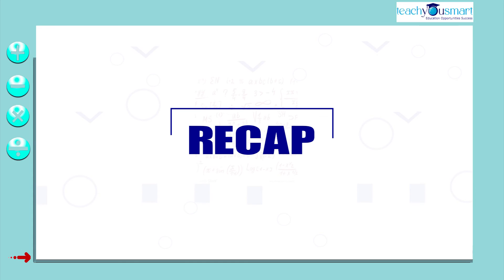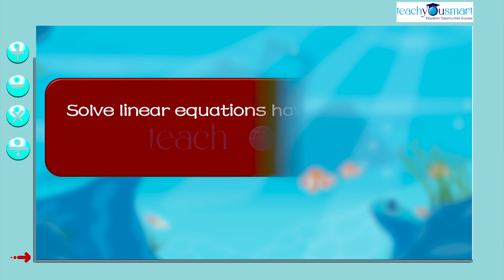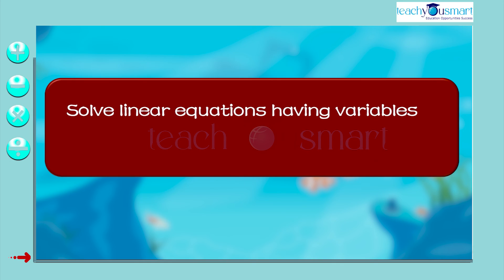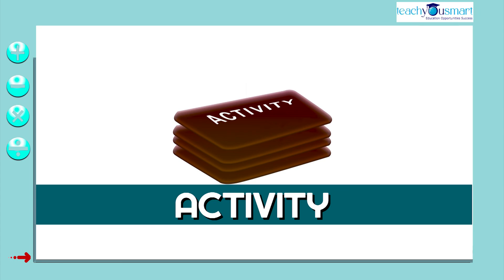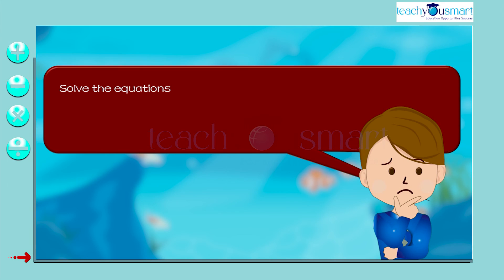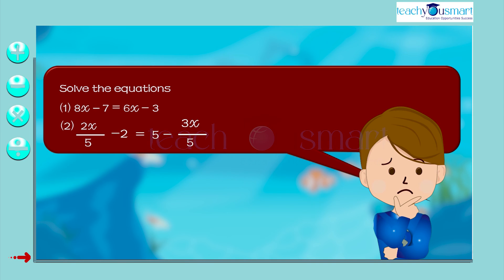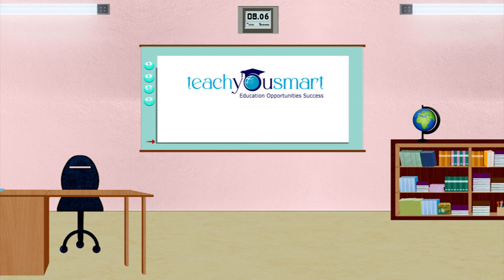Let's have a quick recap. Today we learned to solve linear equations having variables on both sides. Before winding up, let's check how much you understood by doing an activity. Solve the equations: 1) 8x minus 7 equals 6x minus 3; 2) 2 by 5x minus 2 equals 5 minus 3 by 5x. That's all for now, see you all in the next class.